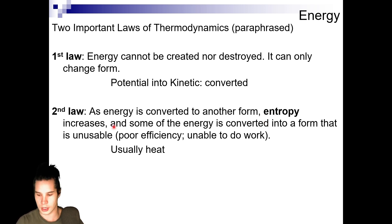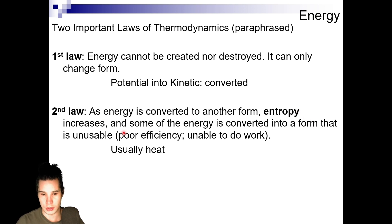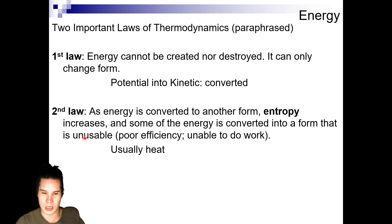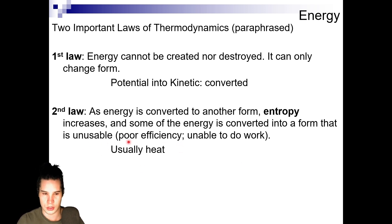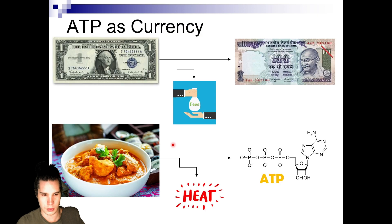The second law is that as energy is converted from one form to another, entropy increases — entropy roughly translates to disorder. Some of the energy being converted is lost to an unusable form, meaning there's poor efficiency between conversions. That unusable form is typically heat, which we can't use to do work.